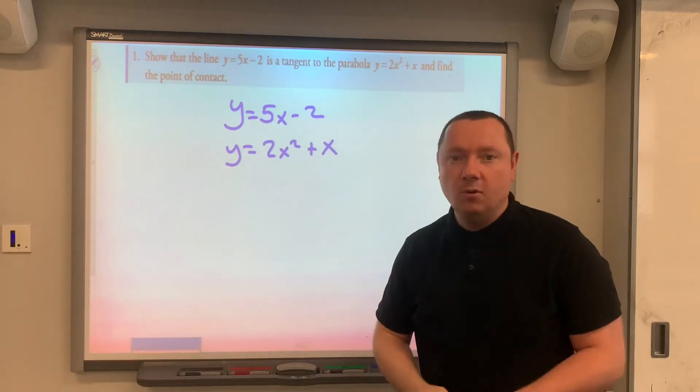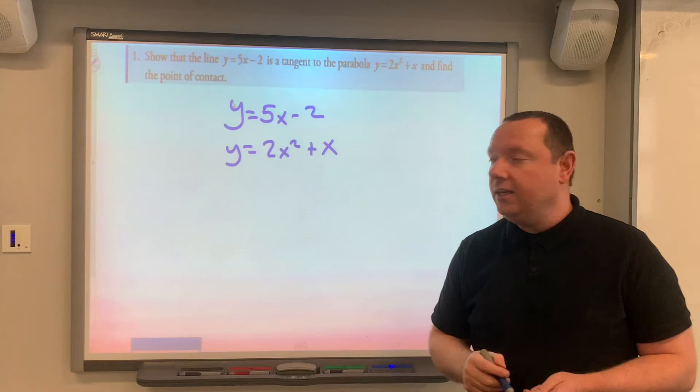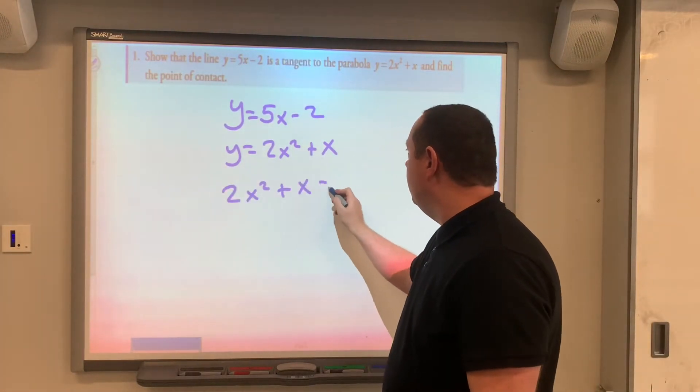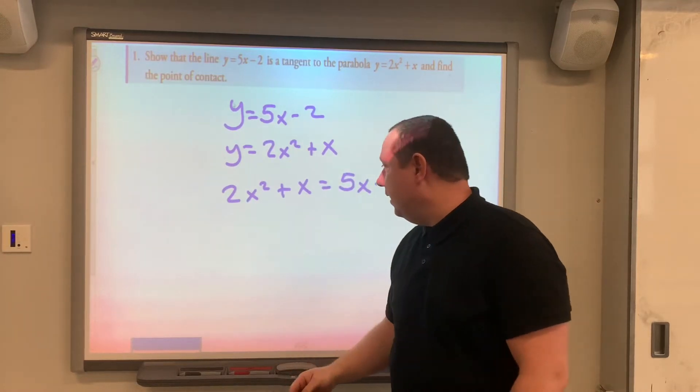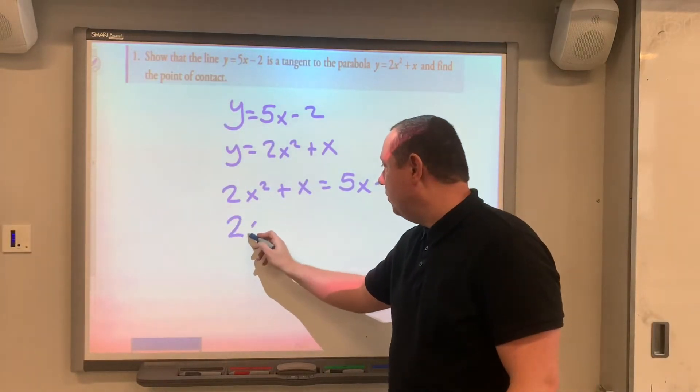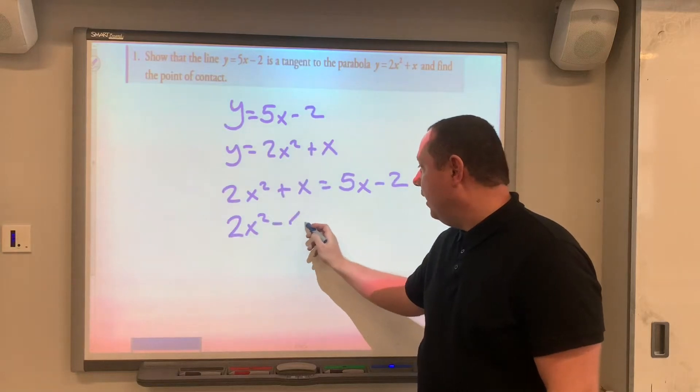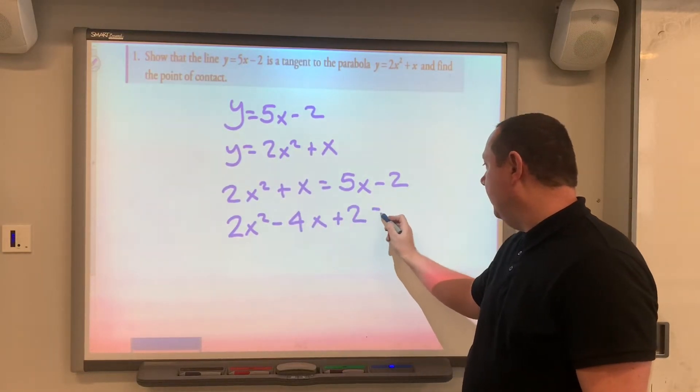To solve these simultaneously, since they both equal y, we can make the right hand sides equal to each other. So 2x squared plus x equals 5x minus 2. Moving the x's and all the numbers over to the same side, that gives me 2x squared, one minus 5 is minus 4x, minus 2 becomes plus 2, and that equals 0.